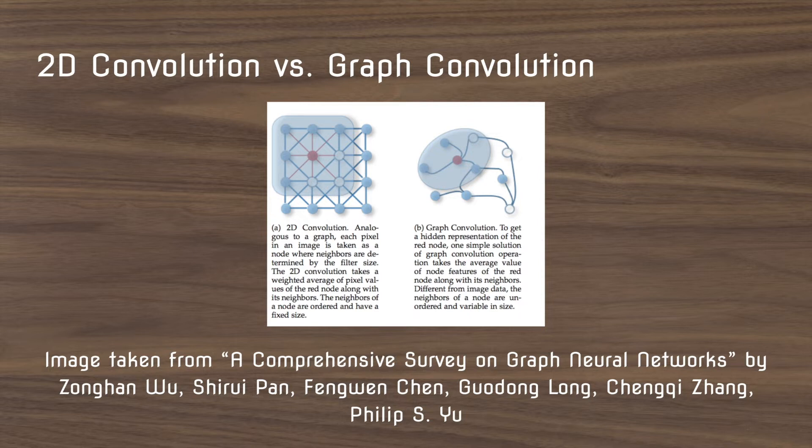But in graph data, they have a variable amount of neighbors. So you don't know exactly how to define your kernel. In convolutions, in image data, you define a 3x3 kernel or a 5x5 kernel. But you can't define such an operation on graph convolutions. That's why you need these clever mechanisms to repeatedly aggregate the neighboring node features.